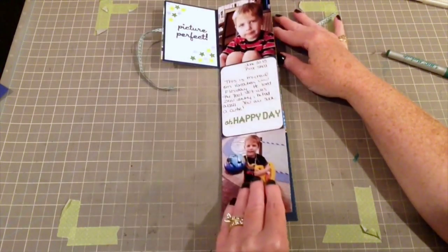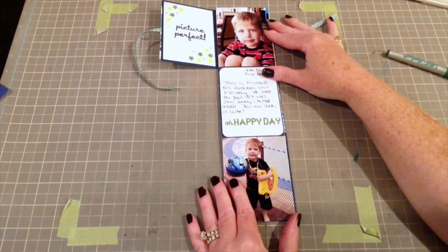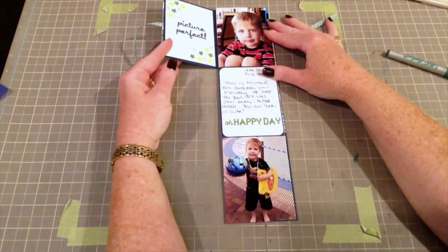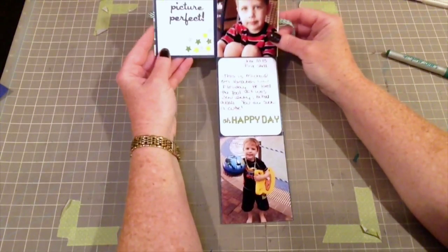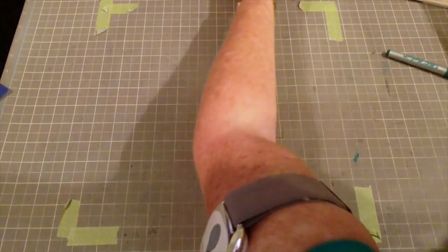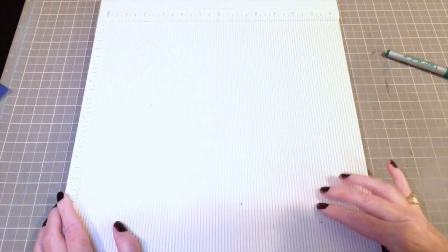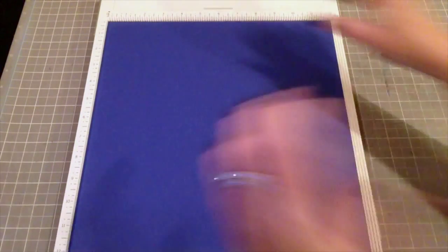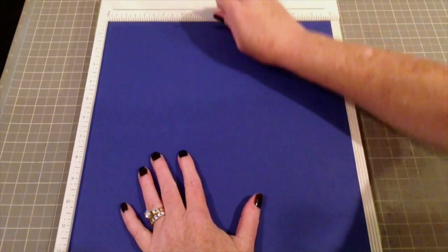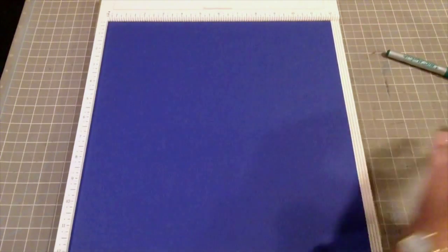Now the really fantastic thing about this little mini card album is that this whole part just uses one sheet of 12 by 12 paper, and that's amazing. It's so super easy to make, so let's get to it and show you what you need. The first thing you need is some sort of scoring board. I have this Martha Stewart one, and you need one sheet of cardstock and a bone folder or something like that to score.